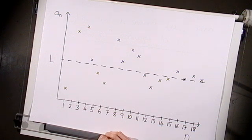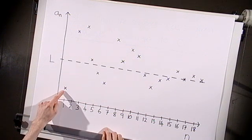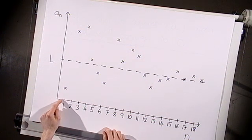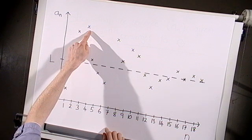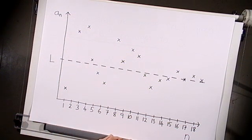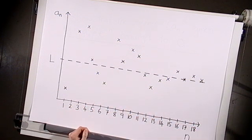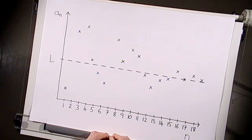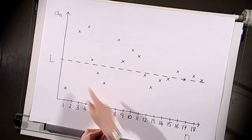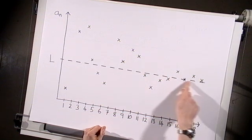Now we're going to look at a graphical illustration of what it means for a sequence to converge to a limit. Here is a plot of some particular sequence a_n. This first cross represents a_1, the first term in the sequence, this cross represents a_2, this one a_3, and so on. In reality there should be infinitely many terms, so this graph should extend infinitely far to the right. But even looking at this finite plot, we see that as n increases, the terms of the sequence are starting to settle down near to this value, l.